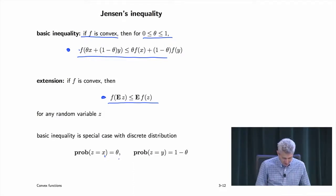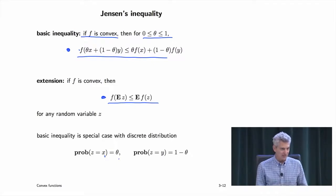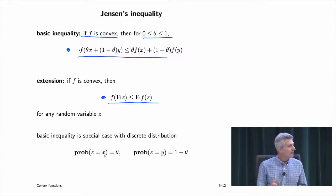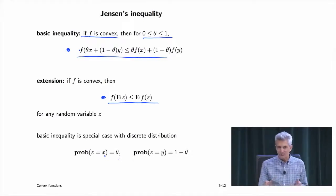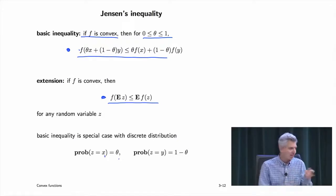This is the most general form of Jensen's inequality, with the two-point version being a special case for an atomic distribution on z. Another way to say this: a function is convex if it doesn't commute with expectation. Or in dialect: dithering — adding zero-mean noise intentionally — increases the value of a convex function.